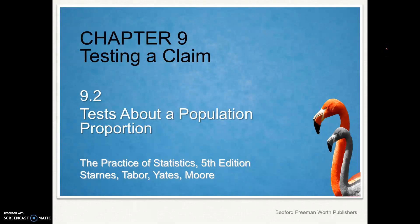Welcome back statistics students to chapter 9 testing a claim. We're picking up here with 9.2 tests about a population proportion. Our population proportion, our parameter, is P here so we remember that.